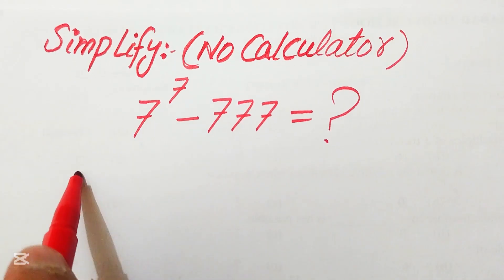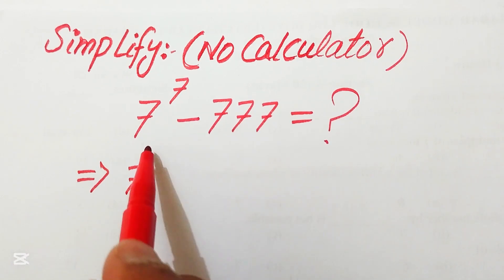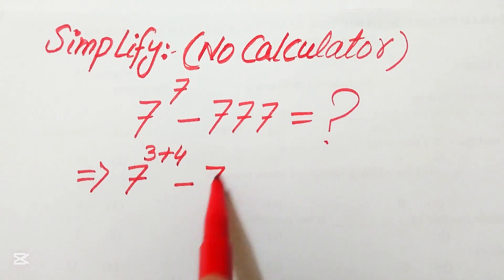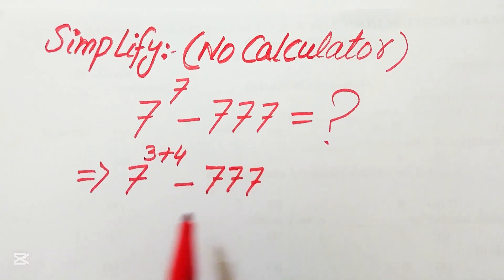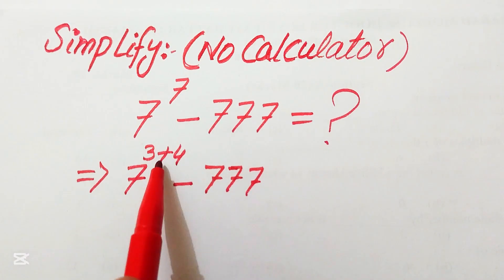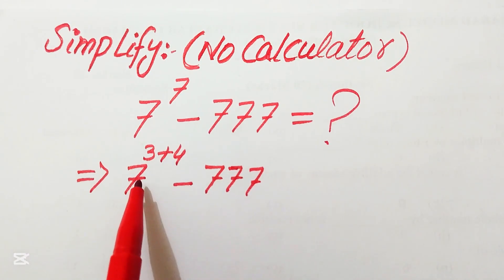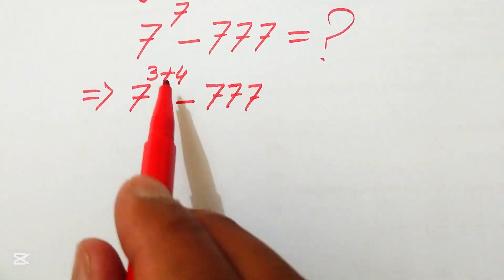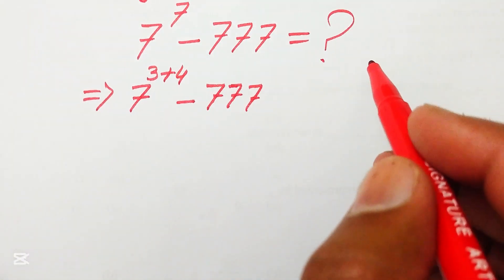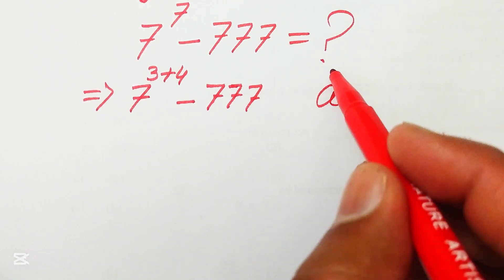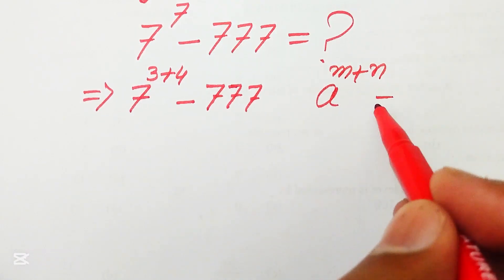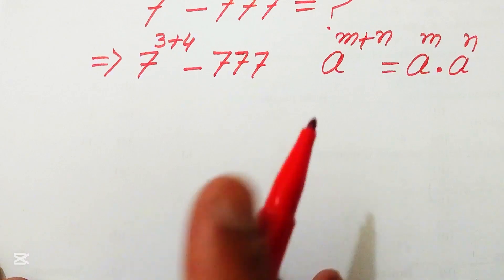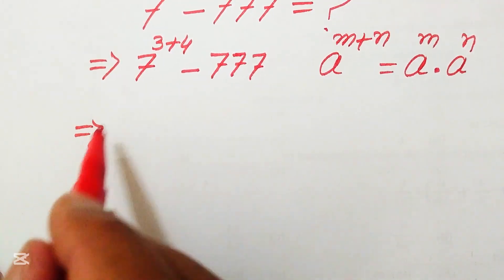The very first step is to focus on 7 to the power of 7 and rewrite it as 7 to the power of 3 plus 4 — we break the exponent 7 as 3 plus 4. We do this because it gives us lower powers that are easier to deal with without a calculator. We then apply the algebraic formula: a^(m+n) = a^m × a^n.